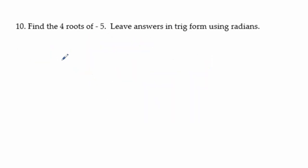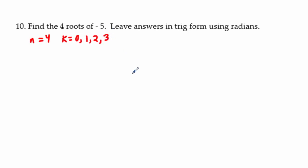Problems 10, 11, and 12 all ask us for roots of a number using the nth root formula, which will be provided on the test. Problem 10: leave in trig form. We're taking the fourth root of −5, so n = 4, and k goes from 0 to 3 (four values). For −5 + 0i: the point is on the negative real axis, so r = 5 and θ = π (in radians).